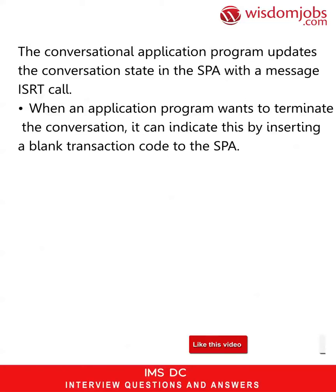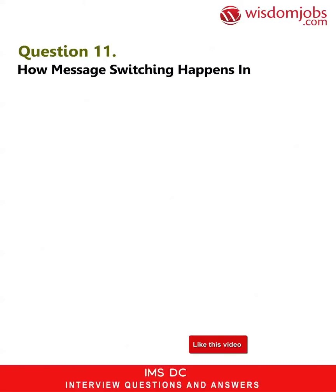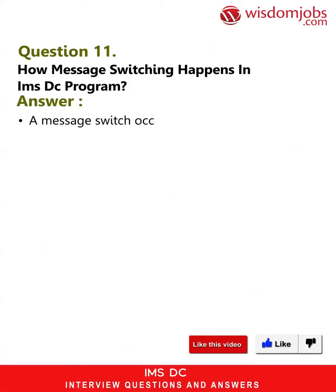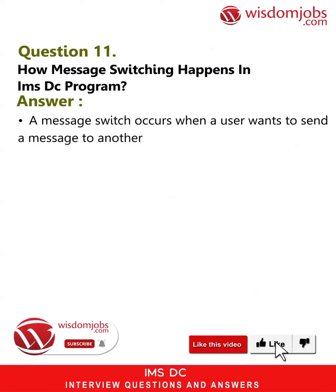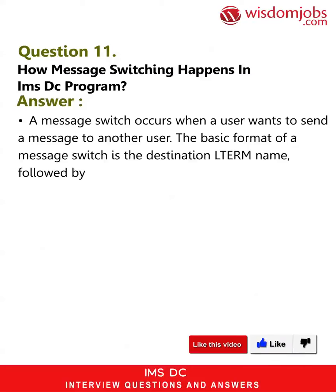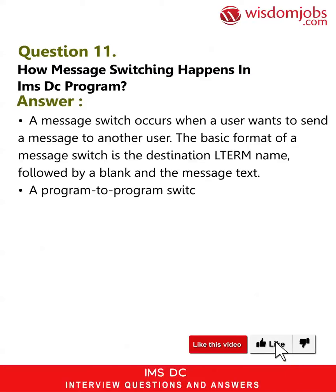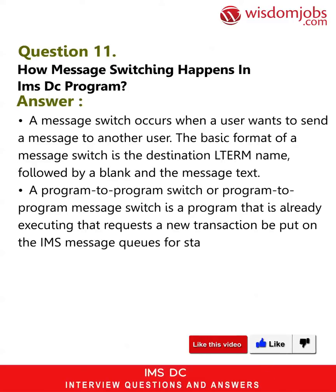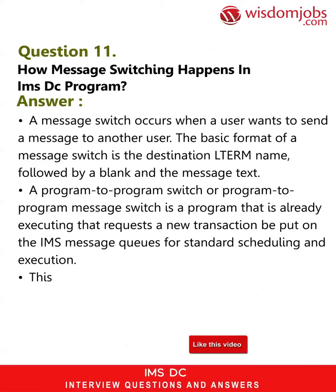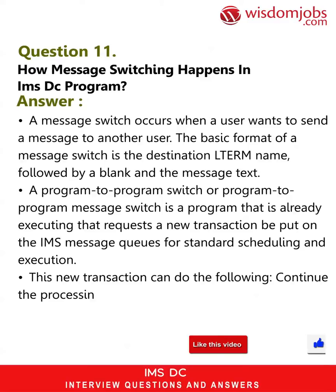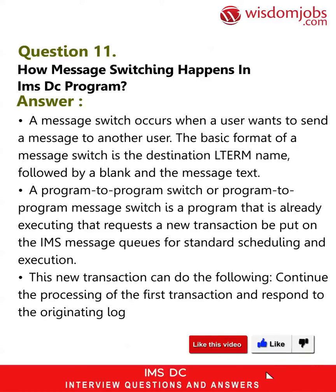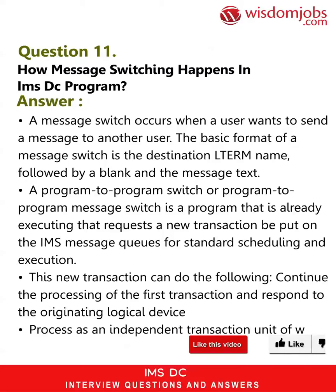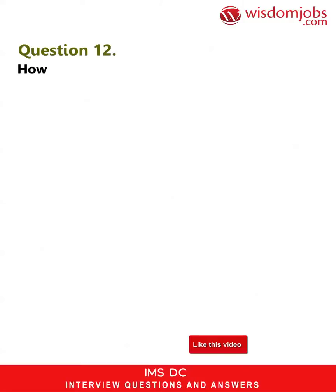When an application program wants to terminate the conversation, it can indicate this by inserting a blank transaction code to the SPA. Question 11: How does message switching happen in an IMS DC program? Answer: A message switch occurs when a user wants to send a message to another user. The basic format of a message switch is the destination LTERM name followed by a blank and the message text. A program-to-program switch is a program already executing that requests a new transaction be put on the IMS message queues for standard scheduling and execution.